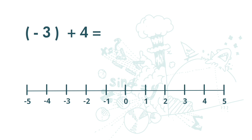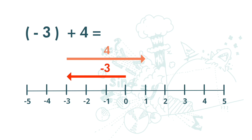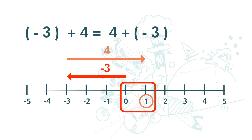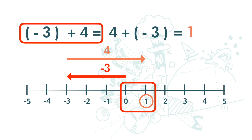Now how about negative 3 plus 4? With negative 3, we move 3 units to the left. With positive 4, we move 4 units to the right, and the answer is 1 again. So 4 plus negative 3 and negative 3 plus 4 are the same. If I have 4 ringgit and I owe someone 3 ringgit, it is the same as I owe someone 3 ringgit and I have 4 ringgit — both cases are the same.